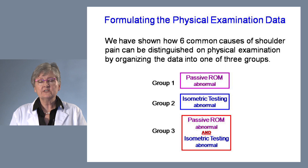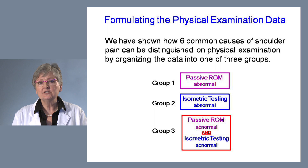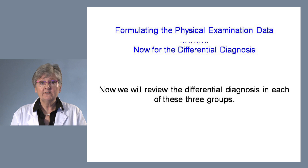Formulating the physical examination data: we've shown how six common causes of shoulder pain can be distinguished on physical examination by organizing the data into one of three groups — Group 1: passive range of motion abnormal only; Group 2: isometric muscle testing abnormal; Group 3: both passive range of motion and isometric muscle testing are abnormal.